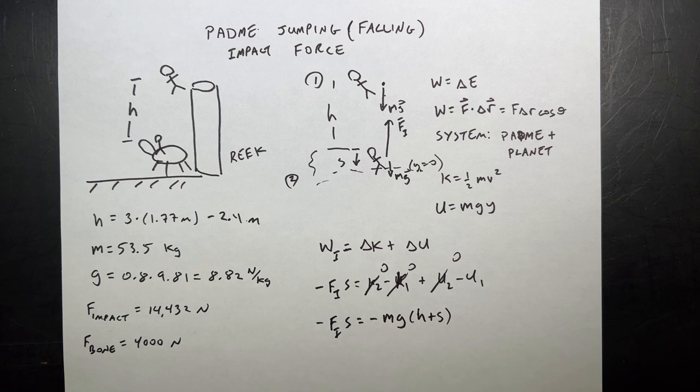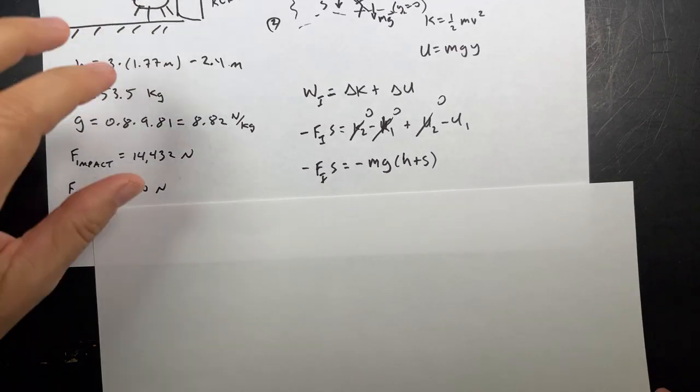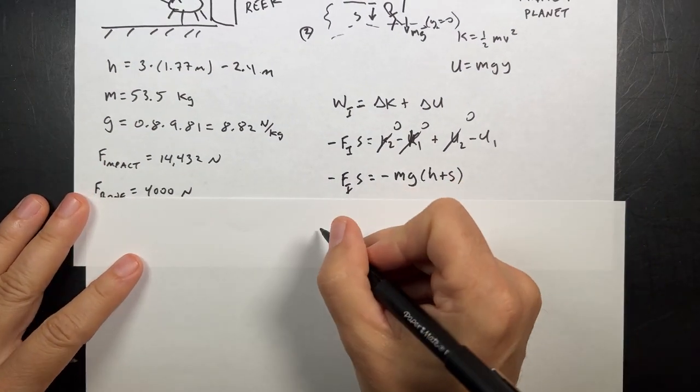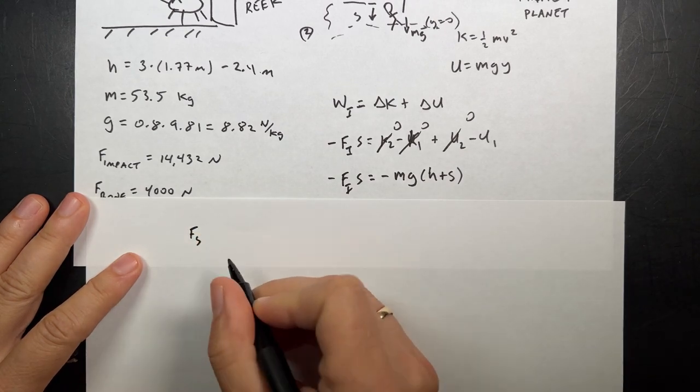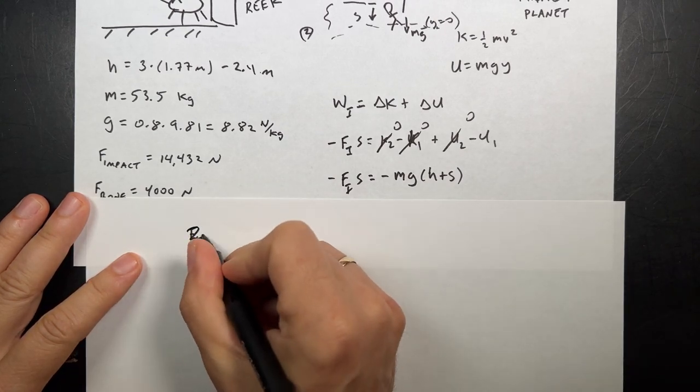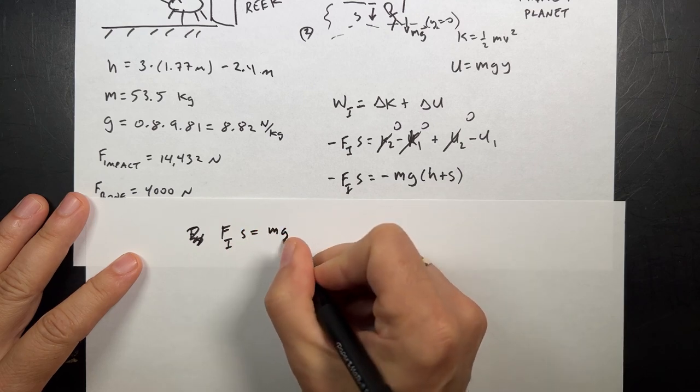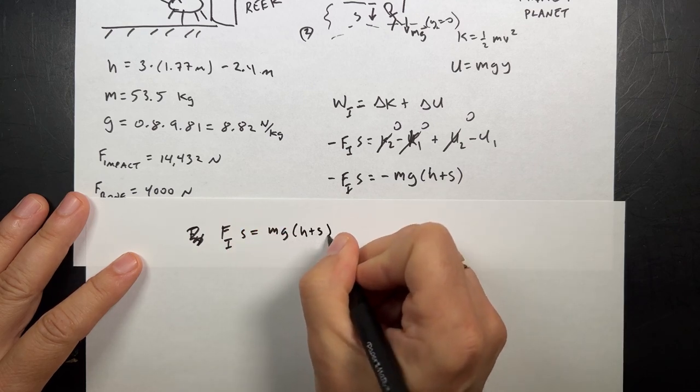And it gets even better. What's the change in potential here? Well, one of these is zero. Can you guess which one? It's this one, right? Because if I pick Y is equal to zero down here, that's zero. Now I can put in my expression for Y1. I get negative FiS equals negative MgY1.